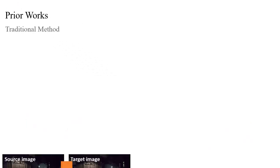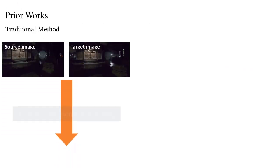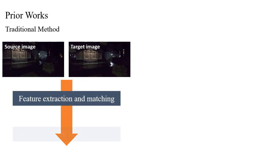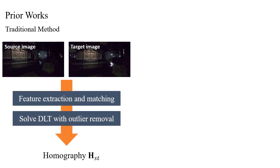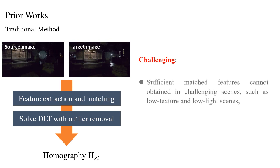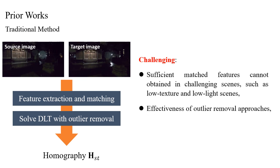Traditional methods usually adopt feature extraction and matching approaches to obtain matched key points and subsequently solve direct linear transform without outlier removal to obtain a homography matrix. However, these methods are highly dependent on the extracted feature matches and the effectiveness of outlier removal methods, which would fail in scenes that lack sufficient high-quality feature points.